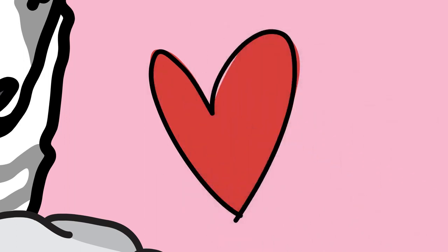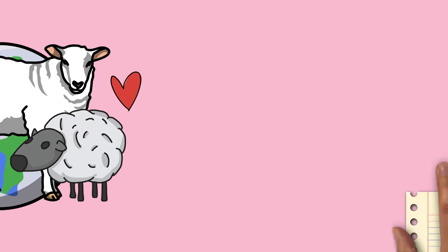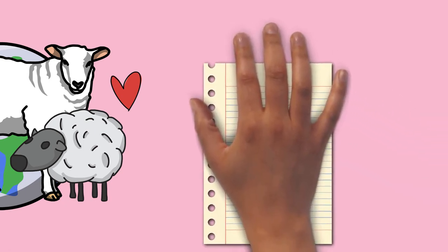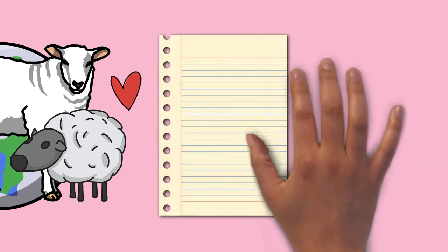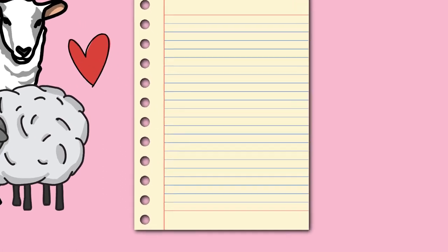A sheep's wool is the most widely used animal fiber and is usually harvested by shearing. In Commonwealth countries, ovine meat is called lamb when from younger animals and mutton when from older ones. In the United States, meat from both older and younger animals is usually called lamb. Sheep continue to be important for wool and meat today and are also occasionally raised for pelts, as dairy animals, or as model organisms for science.